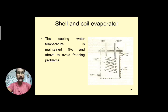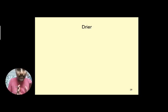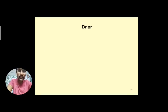The chilled water from the shell and coil evaporator can be used for drinking or other purposes, and this type is mainly used in water coolers. The cooling water temperature must be maintained at 5°C and above to avoid freezing — below zero degrees the water would become ice, stopping flow. Shell and coil evaporators are mostly used for 2-ton to 10-ton capacity plants.